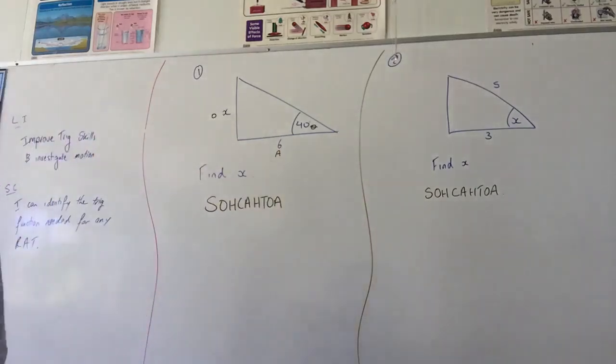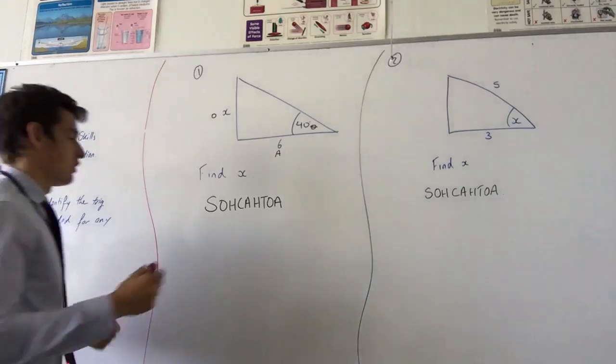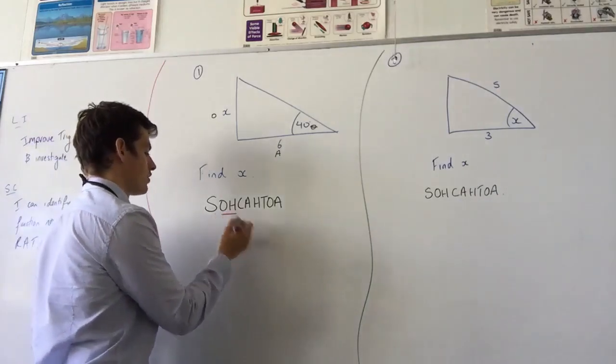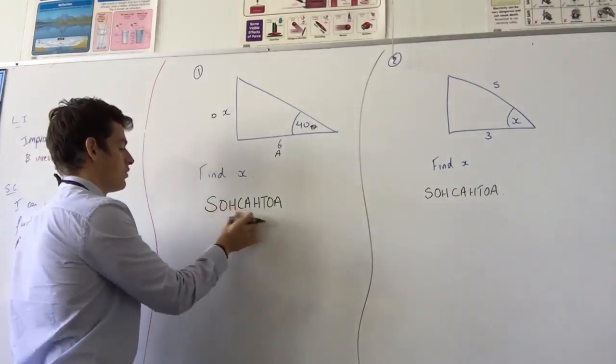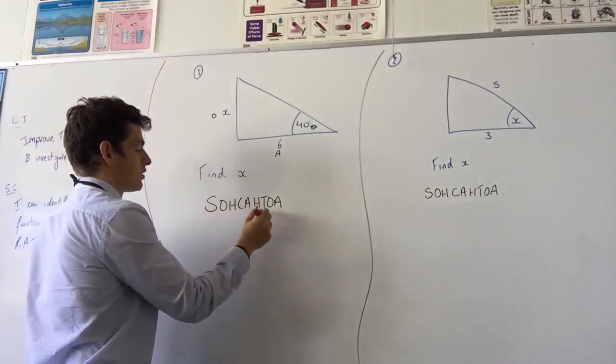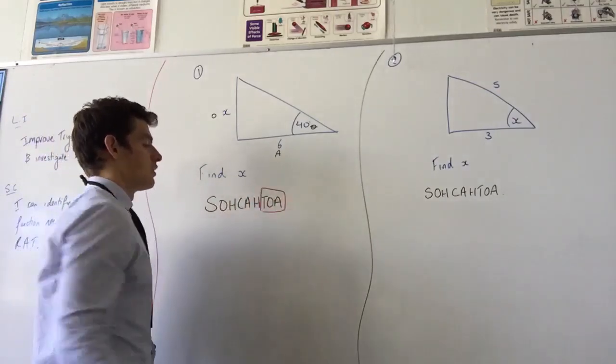So before I go any further, I say which trig identity do I want? That's why I've drawn SOHCAHTOA. Do I have the opposite and the hypotenuse? Ignore that. Adjacent and hypotenuse? Ignore that. So I want to use the last one.